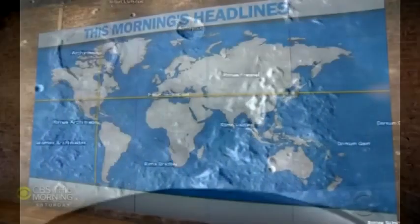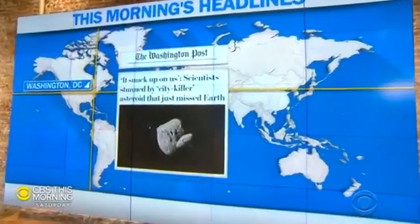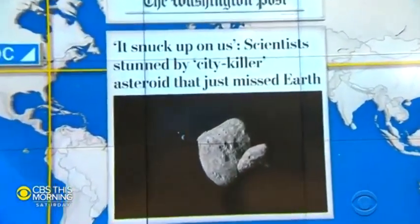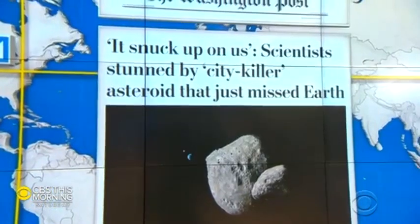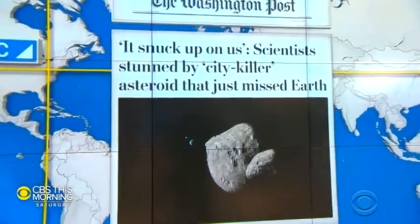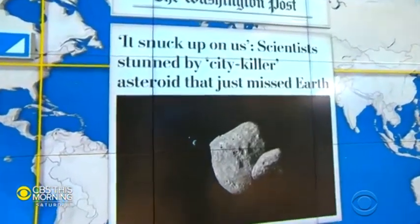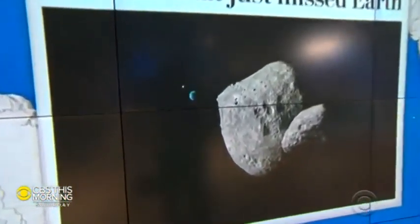The Washington Post reports NASA has confirmed a so-called city-killer asteroid narrowly missed hitting Earth. What's more alarming, scientists say they had no idea it was coming. That is alarming. They're supposed to know. The asteroid about the size of a huge boulder was about 45,000 miles from Earth on Thursday.